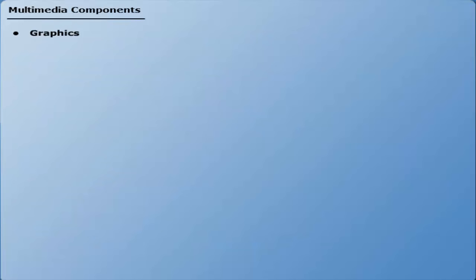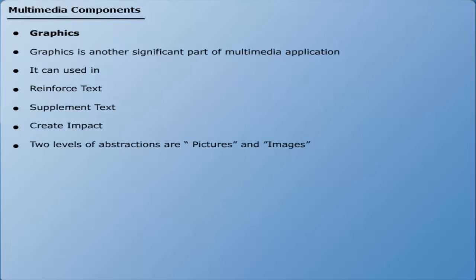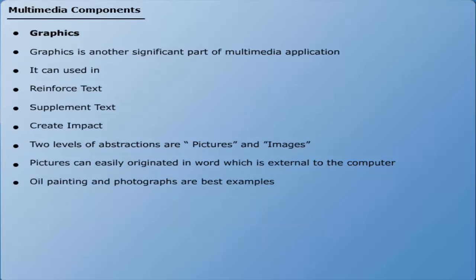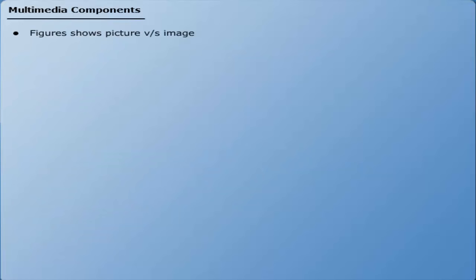Graphics is another significant part of any multimedia application. It can mainly be used to reinforce text, supplement text, and create impact. In graphics, there are two main levels of abstraction: pictures and images. Pictures can be easily originated in the world external to the computer — oil paintings and photographs are well-known examples. On the other hand, images are basically the computer's realistic version adaptation of pictures. It depends on two main factors: the quality of the computer system and the graphic designer's skills in using software.